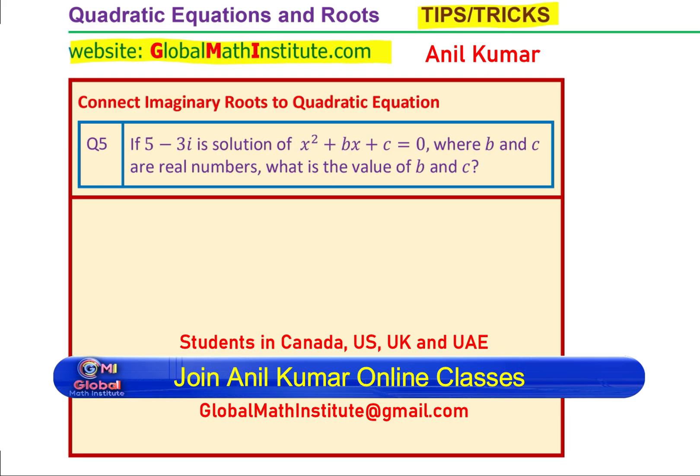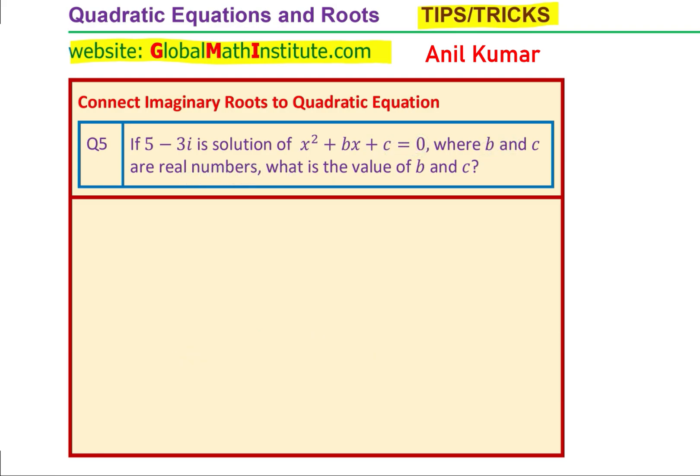The question here is to connect imaginary roots to quadratic equation. If 5 minus 3i is solution of x square plus bx plus c equals to 0, where b and c are real numbers, what is the value of b and c?